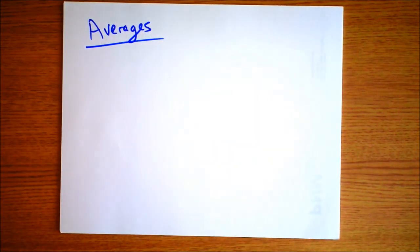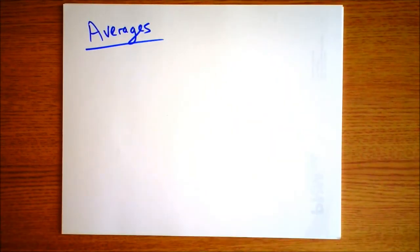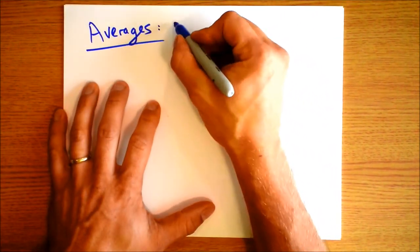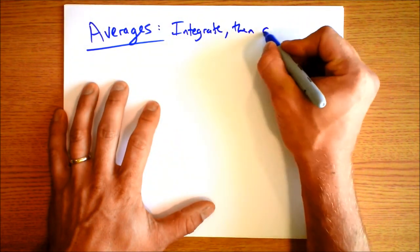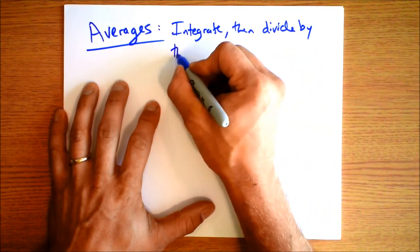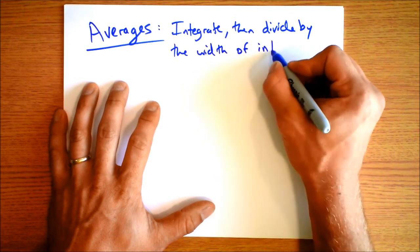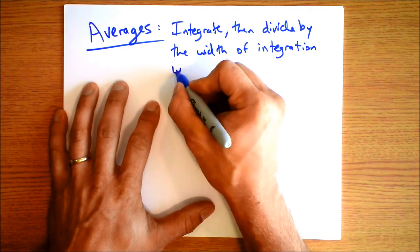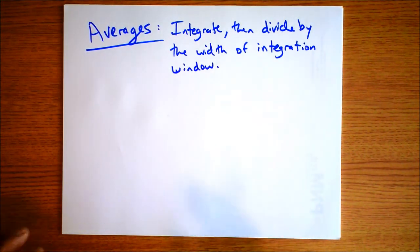Averages. Pretty darn important in physics, wouldn't you say? Turns out integrals can be very useful for us to find averages. So here are the instructions. Integrate, then divide by the width of your integration window, so that's the bounds of your integration. And I'll tell you why this works.